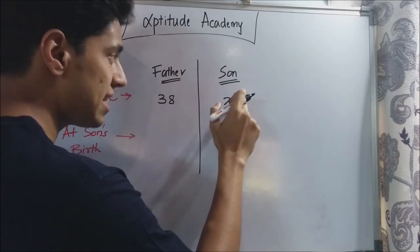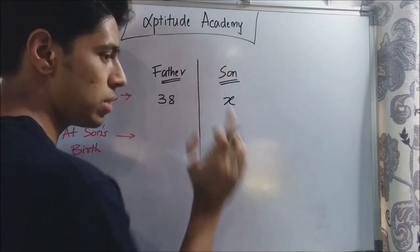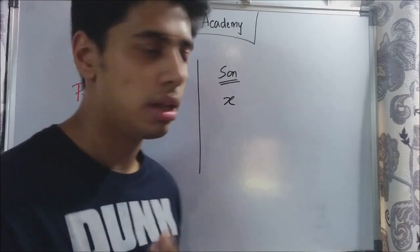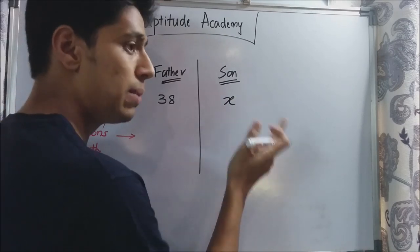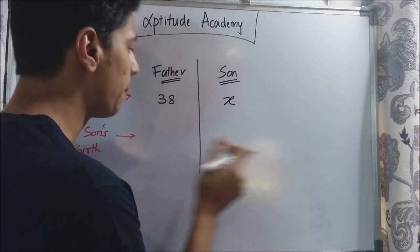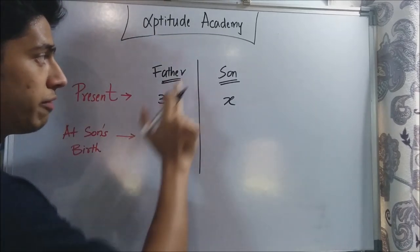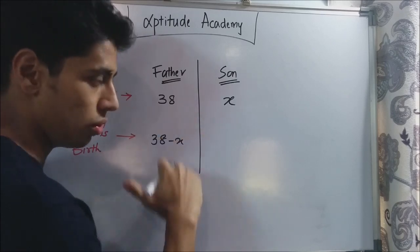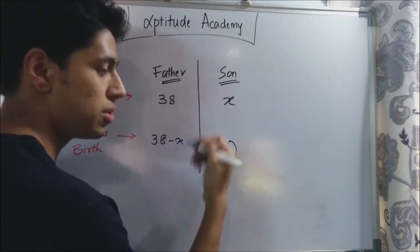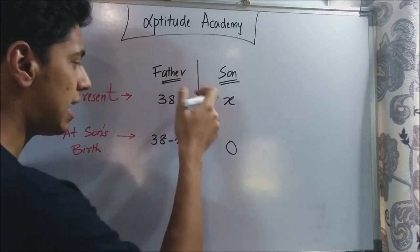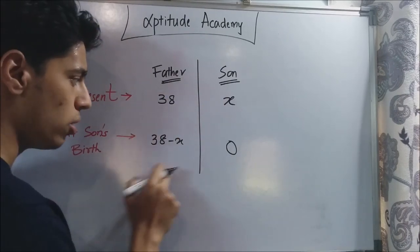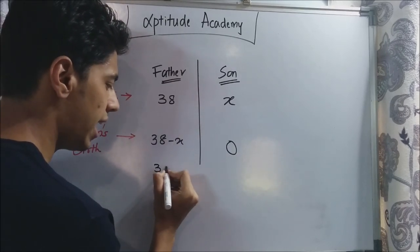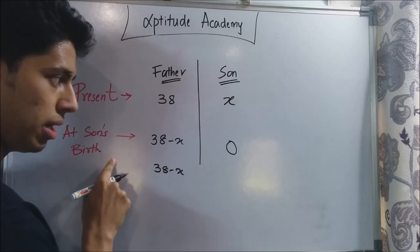The father is telling his son that he was the son's current age when the son was born. If the son is x years old, he was born x years ago. So at the time of the son's birth, the father's age was 38 minus x. What the father is saying is that his age at the time of the son's birth equals the son's current age.